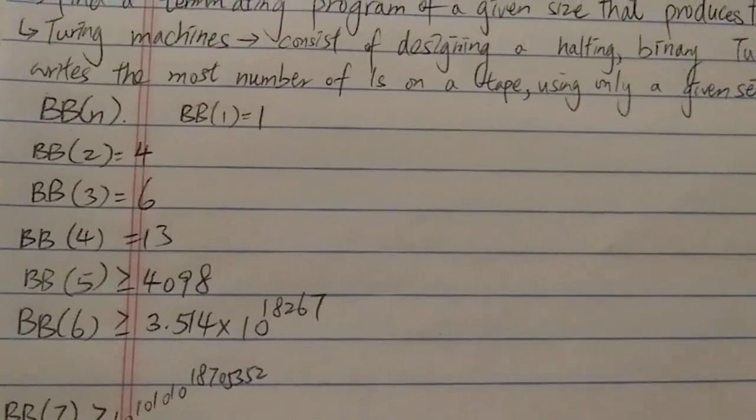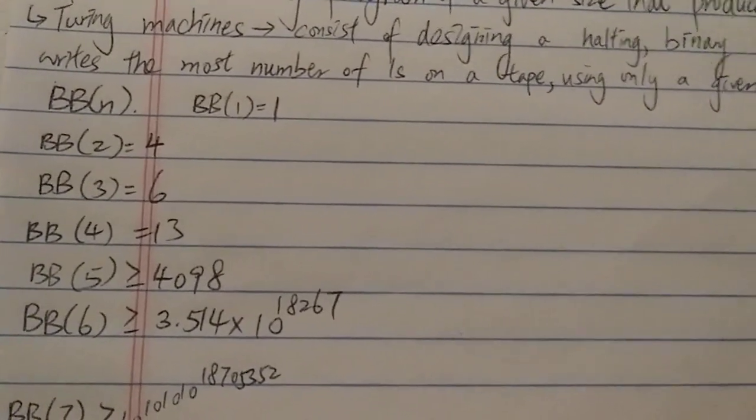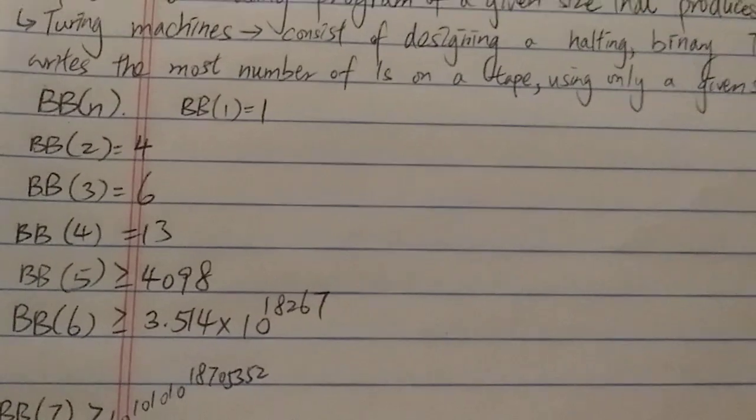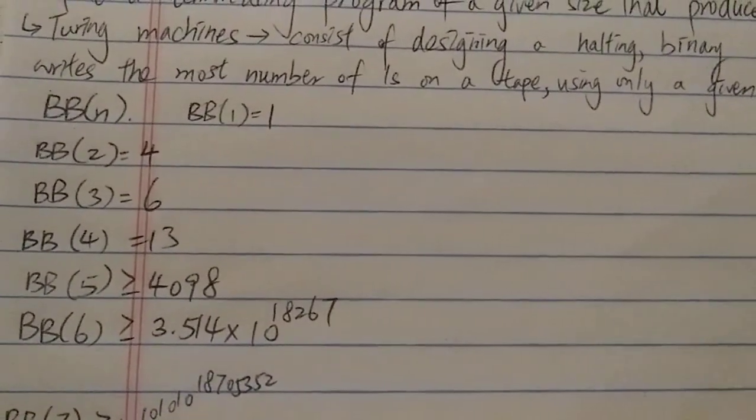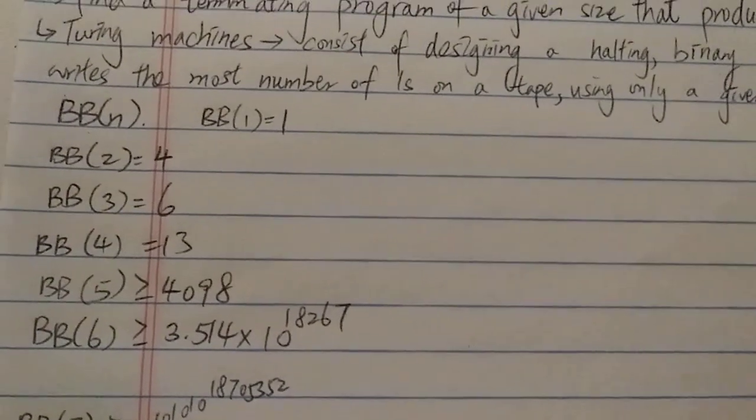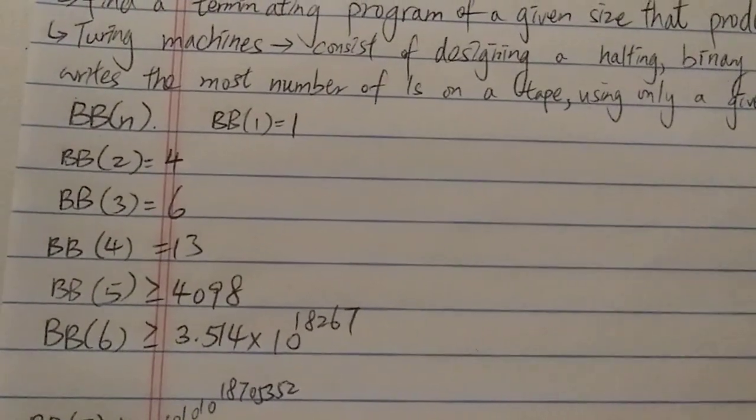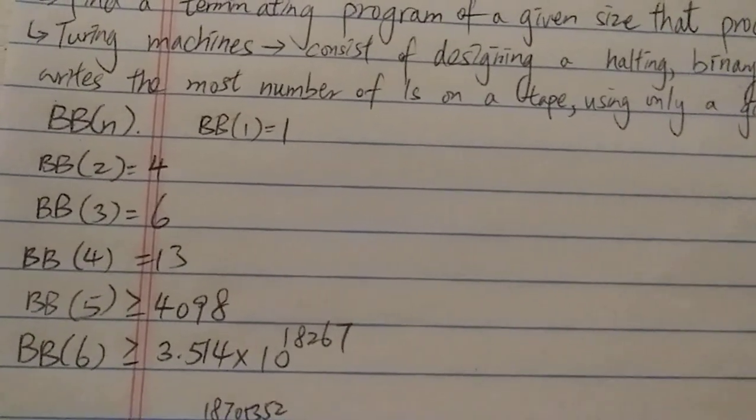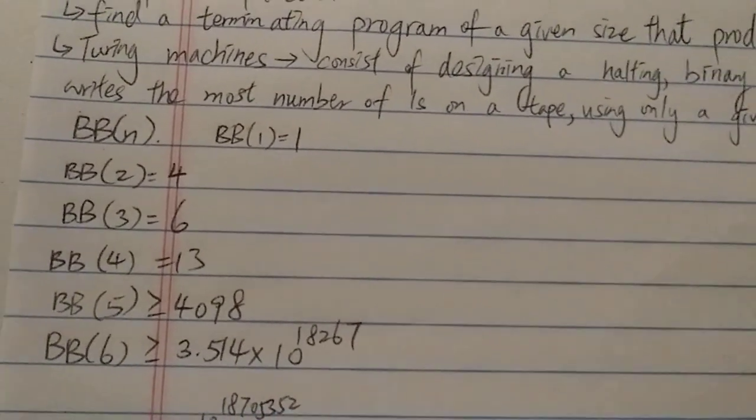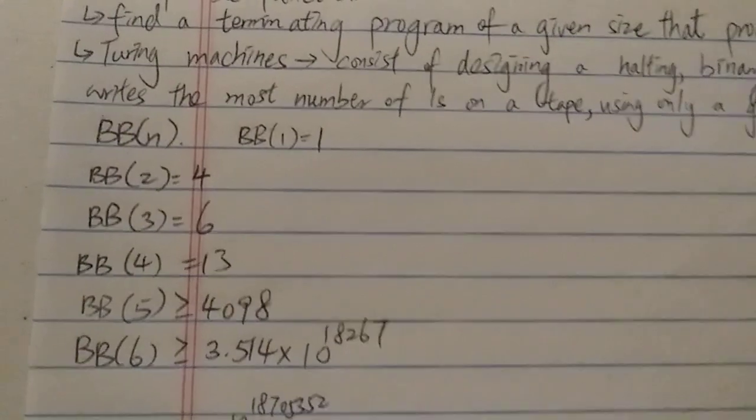One of the key things here is you have to stop. You cannot just loop back and forth writing an infinite number of ones - that doesn't count. You have to have a Turing machine that would eventually stop.